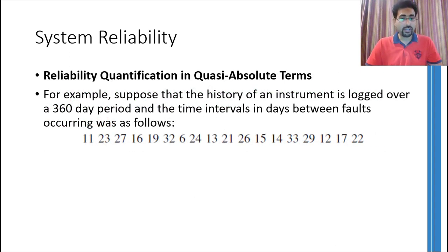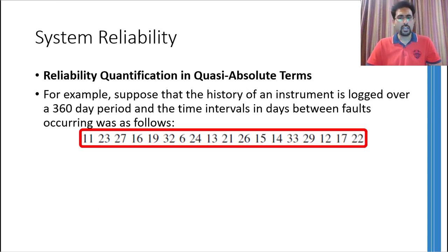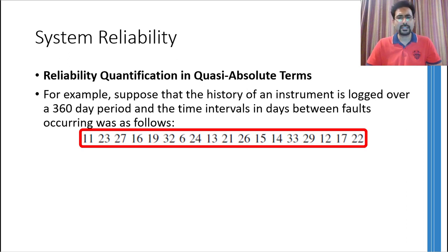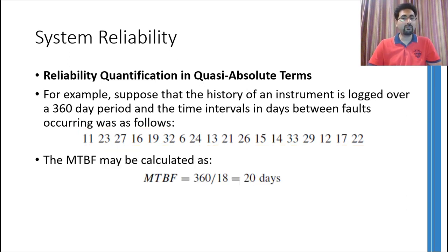Let us go through an example to understand mean time between failures more concretely. Suppose you are logging the history of failures of a certain instrument installed in an industrial setup continuously for 360 days. The instrument met its first failure after 11 days of use, then you repaired it — supposing you repaired it on the same day. After repairing, the instrument worked for 23 days before failing once again. Similarly, the next failure came after 27 days, then 16, and so on. You continued this exercise for a complete year and at the end had 18 total failures. Dividing 360 by 18 gives you 20 days — the mean time between failures.